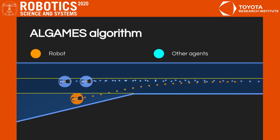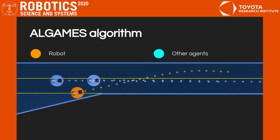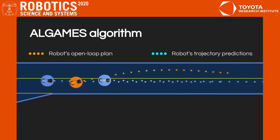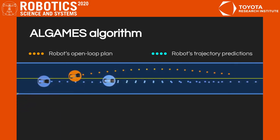We envision ALGAMES being run online by a robot in a receding horizon loop. At each iteration, the robot would plan a trajectory by explicitly accounting for the reactive nature of all agents in its vicinity.